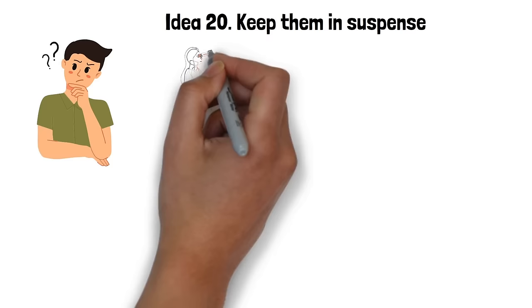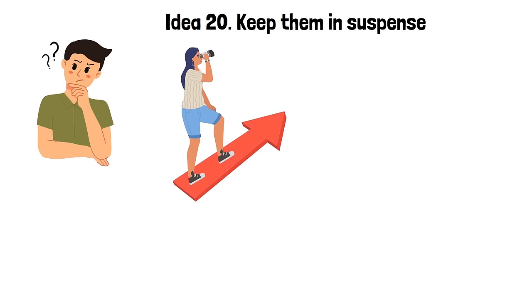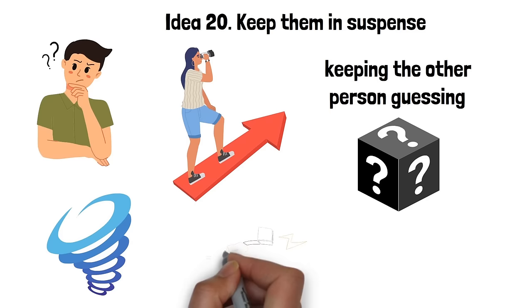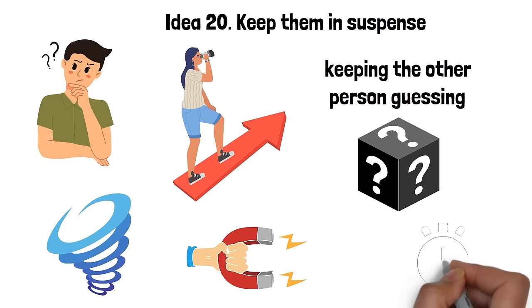Idea 20. Keep them in suspense. Keeping someone in suspense is an essential tactic in the art of seduction. It revolves around creating a sense of anticipation and unpredictability that keeps the other person engaged and intrigued. This might involve varying your behavior or responses, revealing information bit by bit, or introducing unexpected twists in your interactions. The essence of suspense is the unknown, the not yet revealed. It's about keeping the other person guessing, making them eager to find out more. The uncertainty generated by suspense is intriguing because it stimulates curiosity and the desire to solve the mystery. This approach helps sustain interest and excitement over a longer period, maintaining the allure and attraction.